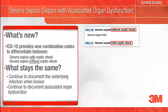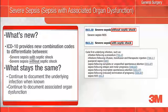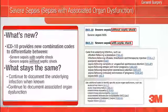ICD-10 provides new combination codes to differentiate severe sepsis with or without septic shock. It is important to document septic shock when present, in addition to the underlying infection when known, and any associated organ dysfunction such as acute respiratory failure, acute renal failure, acute hepatic failure, and/or disseminated intravascular coagulopathy. Acute organ dysfunction is an important predictor of severity of illness and risk of mortality in the critically ill patient. Should you treat a patient with SIRS due to a non-infectious process such as trauma, be sure to document this, along with any associated acute organ dysfunction.